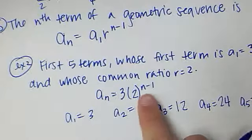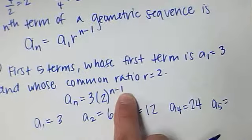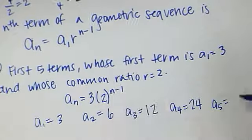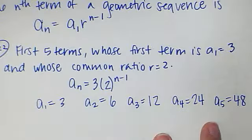And A5, which is 5 minus 1, which is 4. 2 to the fourth is 16, and 16 times 3 is 48. So that's the first five terms of my sequence.